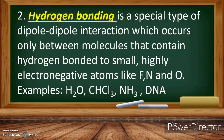Hydrogen bonding is a special type of dipole-dipole interaction which occurs only between molecules that contain hydrogen bonded to small, highly electronegative atoms like fluorine, nitrogen, and oxygen. Examples include H₂O (water), CHCl₃ (chloroform), NH₃ (ammonia), and DNA (deoxyribonucleic acid).